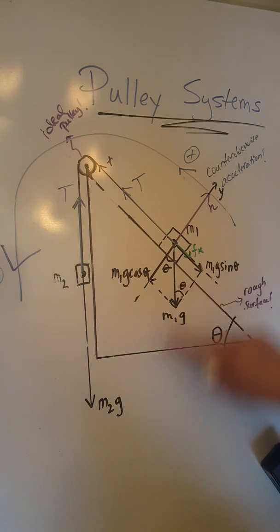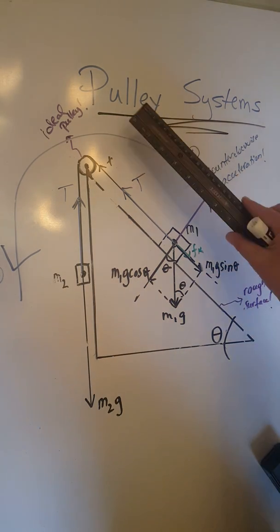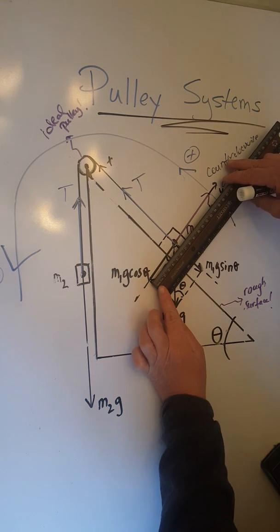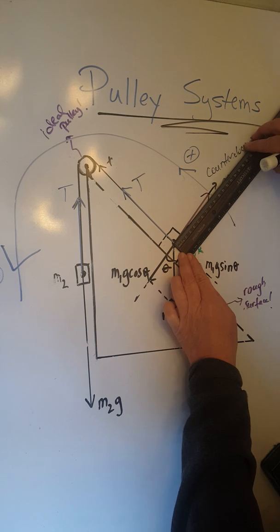So let's start with the forces on the y, which are N and M1g cos theta. They must be balanced, because the object accelerates up the ramp, which means M1g cos theta is 7 centimeters, N is 9.